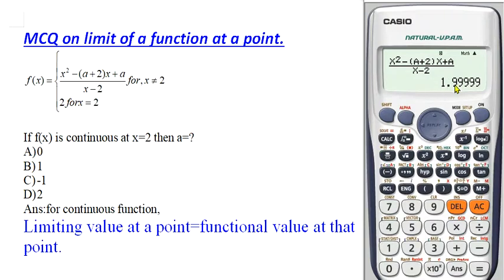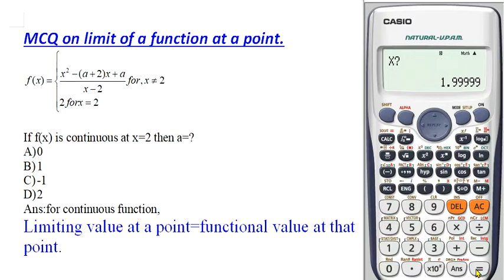The calculator shows the limiting value is 1.9999, which is very close to 2. The functional value at x = 2 is also 2. So the limiting value equals the functional value, meaning option A (a = 0) is the correct answer.